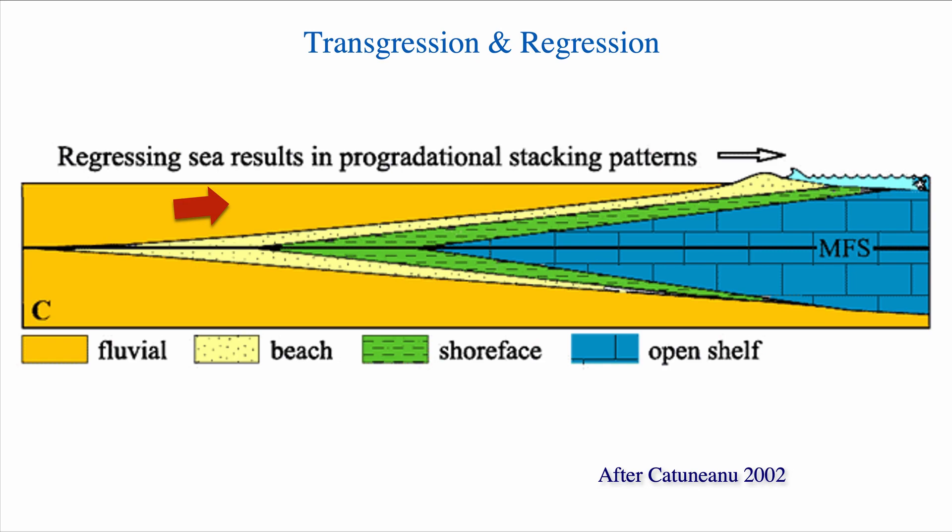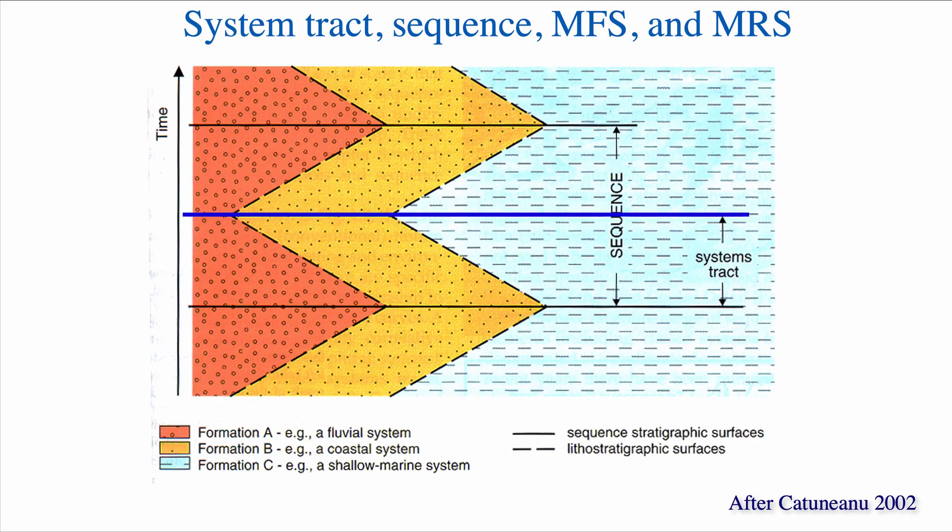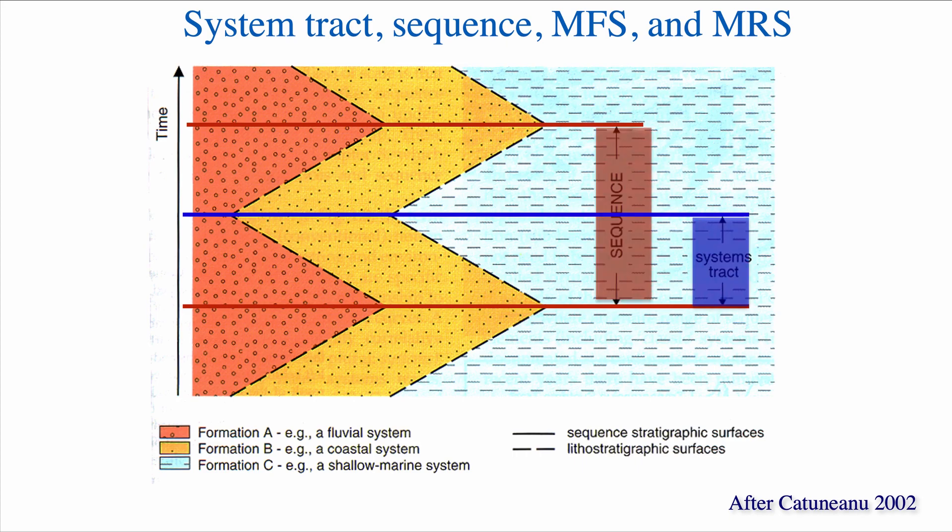And the line that separates the transgression to regression is known as the maximum flooding surface, or MFS. So we can see with this transgression, regression, and the maximum flooding surface, that sequence stratigraphic units can be further divided into system tracts. On this diagram, you can clearly see the transgression regression. You can also clearly see in red that we have sequence boundaries. And if you have a sequence, one sequence, you can have within sequences system tracts that represent a significant shift in the direction of migration of those facies - for instance, from transgression to regression.